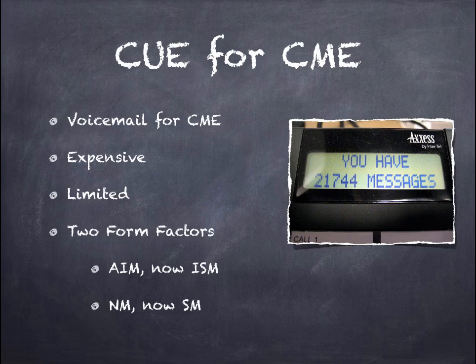The second product is CUE — the voicemail module for Call Manager Express. Cisco makes a module you can install into your router that allows you to store voicemails. Without CUE, Call Manager Express would have no voicemail capability, pretty severely limiting its ability to work as a call manager. CUE is unfortunately expensive because it is a small proprietary card installed inside the router. Also, like all router cards, when new router models come out, the CUE cards won't fit them and you'll have to replace them. They also have very limited storage capacity.